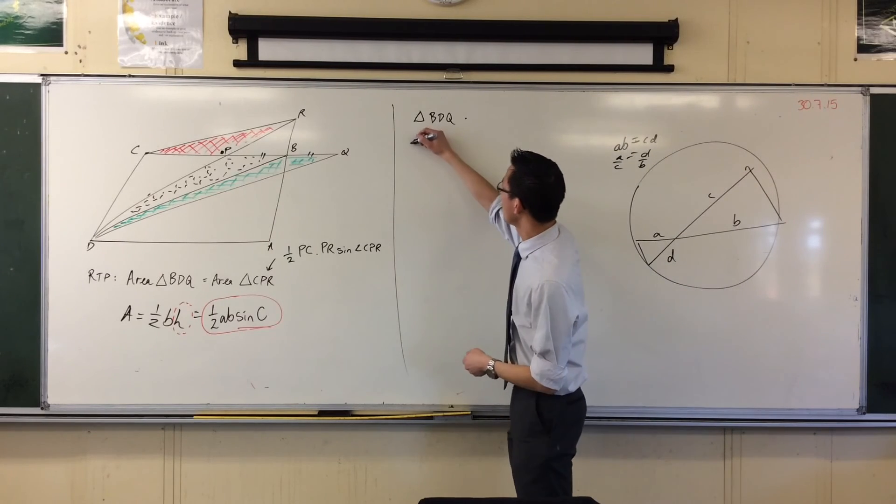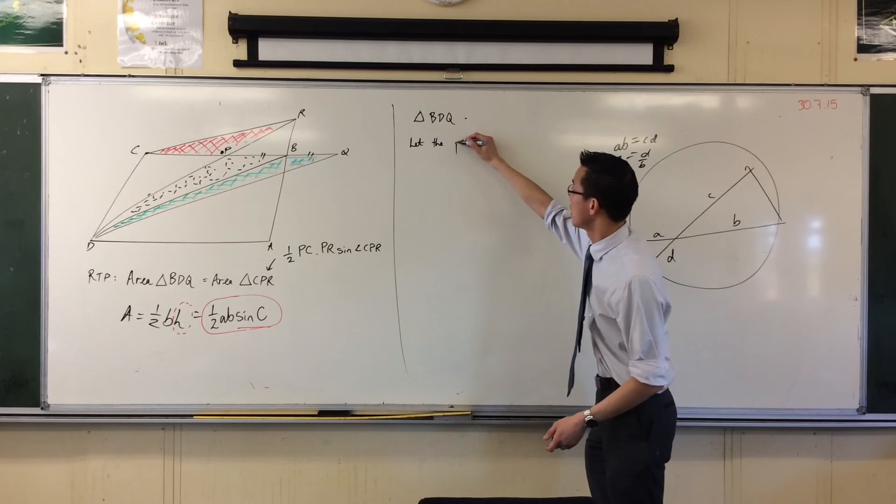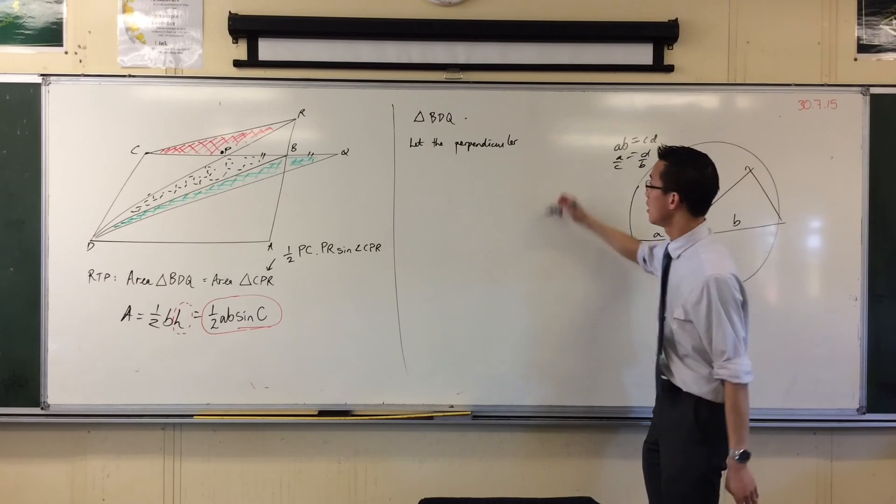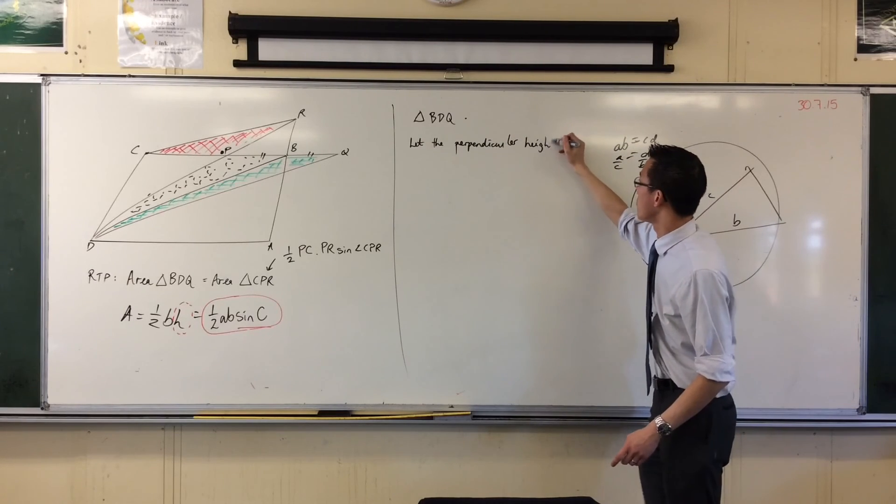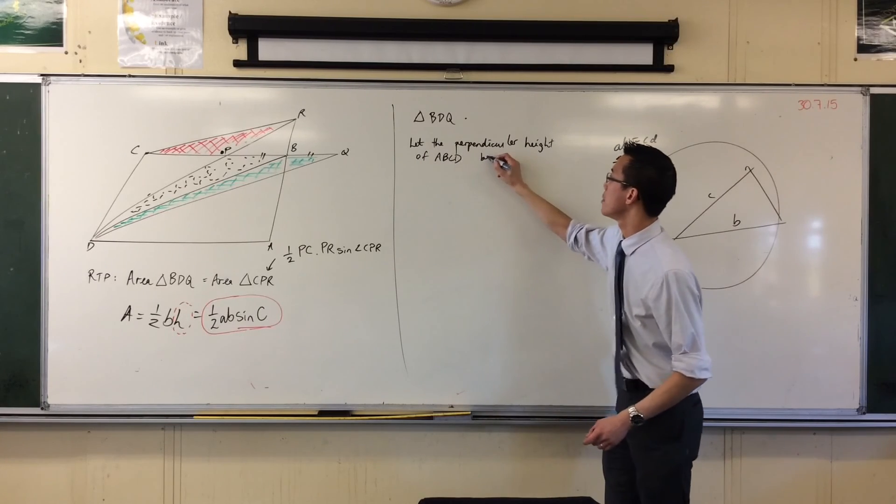Let me start writing. I'm going to say, let the perpendicular height of the parallelogram, because that's where I'm constructing everything off. Let the perpendicular height of A, B, C, D, be H. It's not on there yet, so I'm just going to draw it in. I'm going to draw it in here.